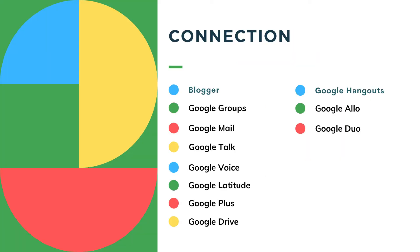For connections, Google has Blogger, Google Groups, Google Mail, Google Talk, Google Voice, and Google Latitude. Google+ was a result of Google's endeavor to expand its business strategy into the connection segment; in 2016, there were over 375 million active members. Google+ combines a variety of old and new connection features, yet still has a hard time competing with Facebook, the world's largest social network. Additionally, there is Google Drive, Google Hangout, Google Allo, and Google Duo.